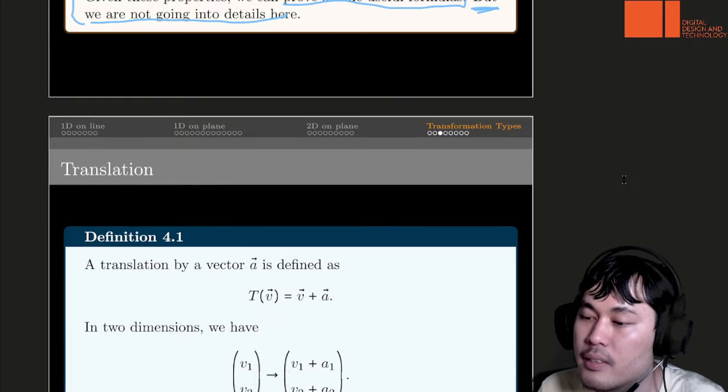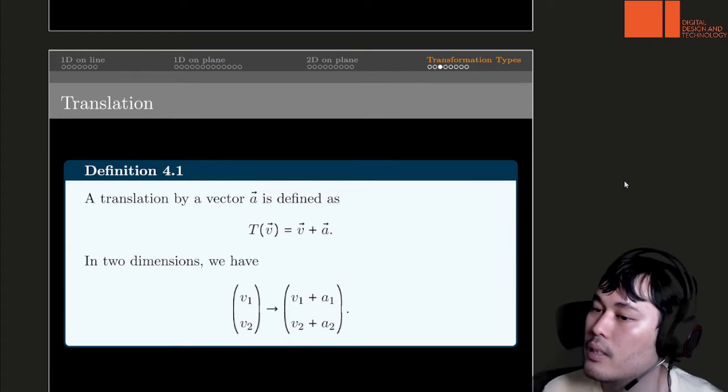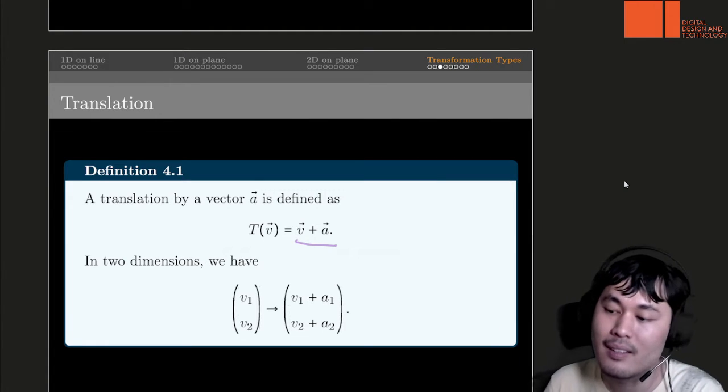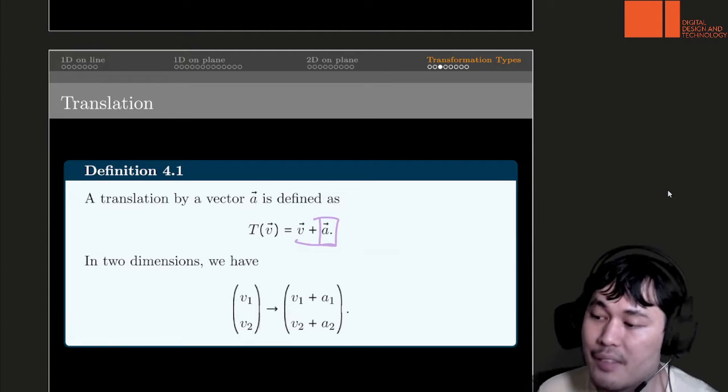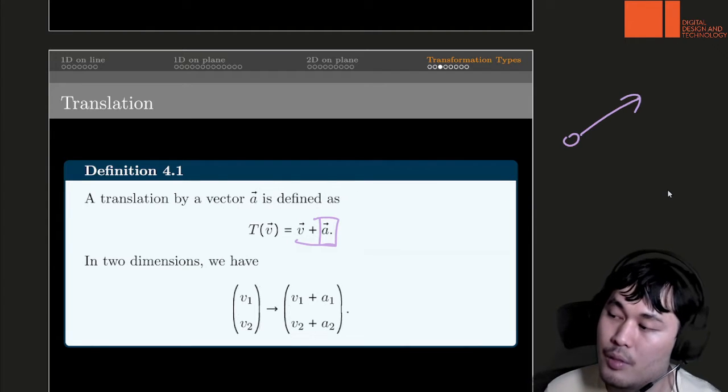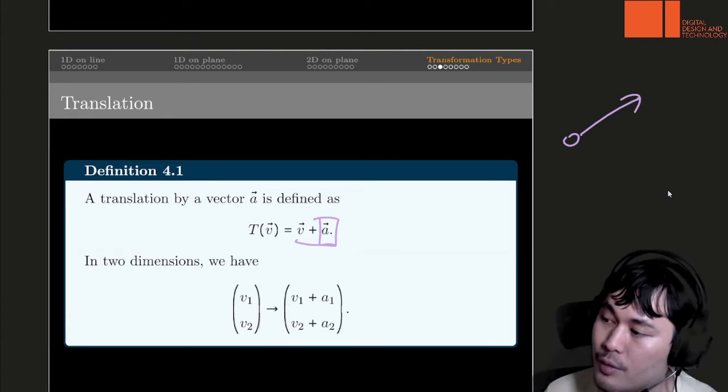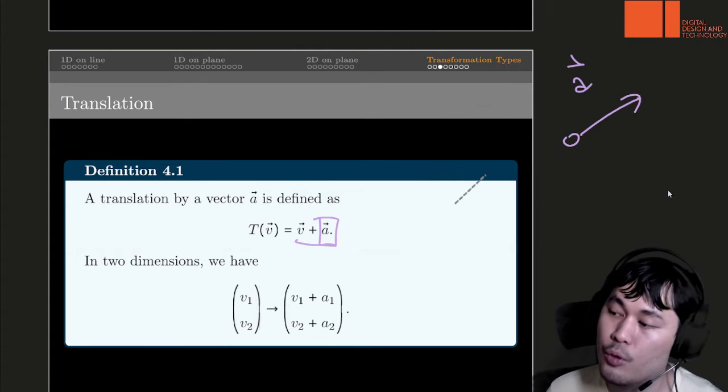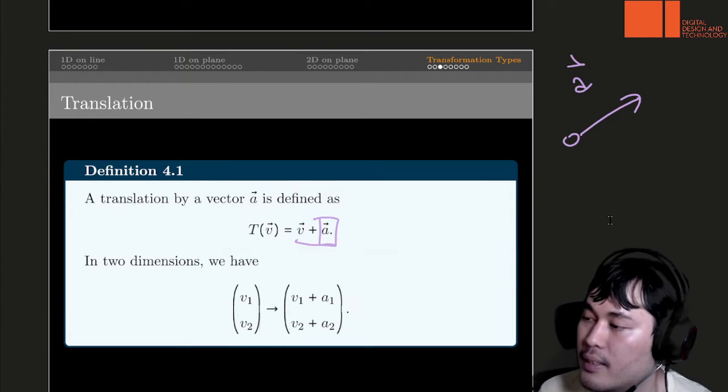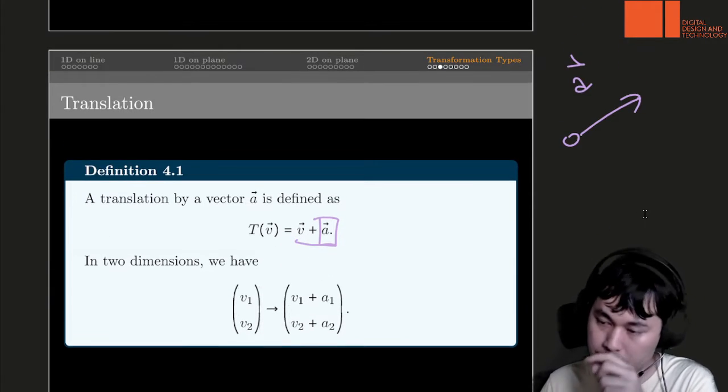And the transformations we saw, first we have a translation. So, this translation is simply you add two vectors together. I already explained that earlier. But here, we think of the vector as a fixed vector. Remember the GeoGebra one where you have to choose a vector first and then you click translate and everything moves. And that vector is fixed. And now everything else on the plane will be moved or added by this vector. So that's the transformation. It can be written simply as this one.